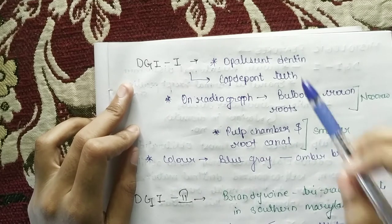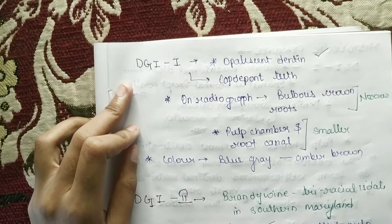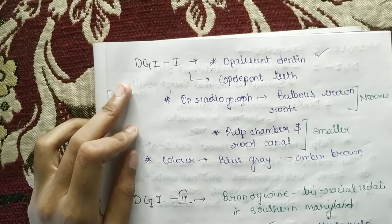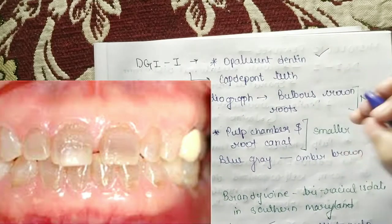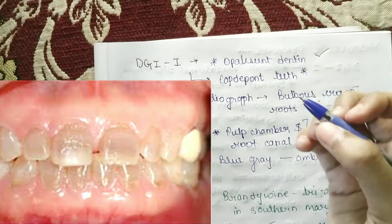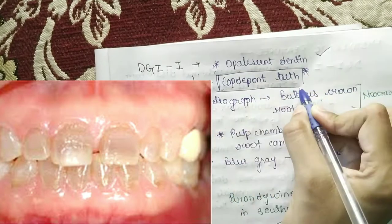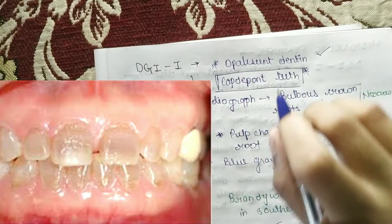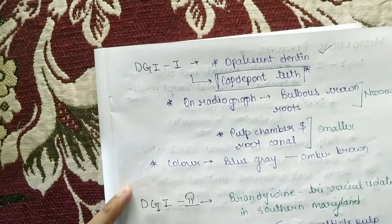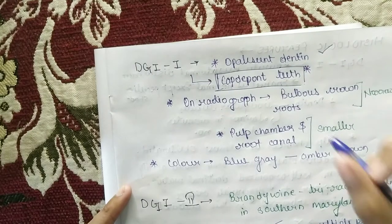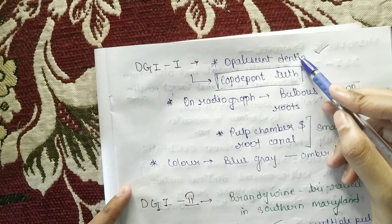The clinical feature is opalescent dentine. As you can see in the picture, this is the most important point. In dentinogenesis imperfecta type 1, you see a cap-dip appearance on teeth. Why does this cap-dip appearance occur on teeth? It is because of opalescent dentine.